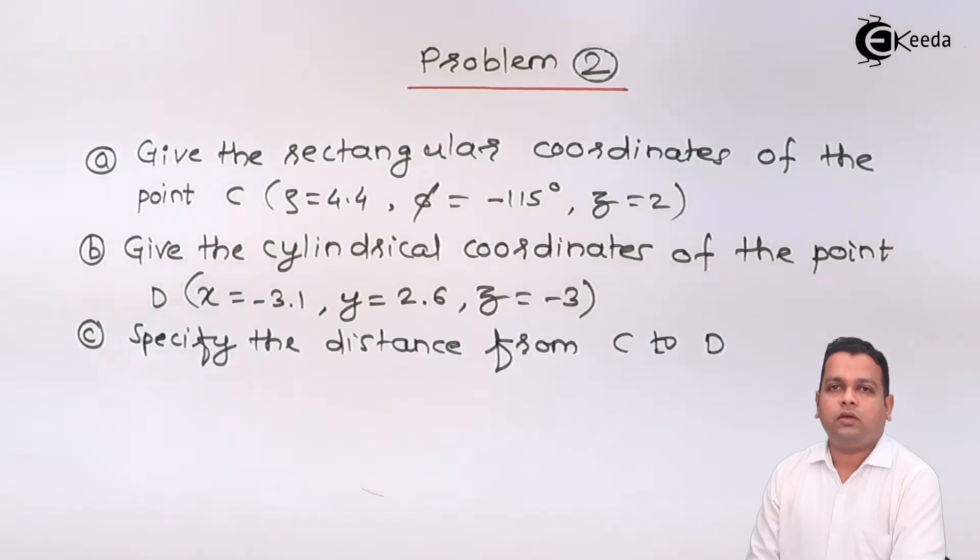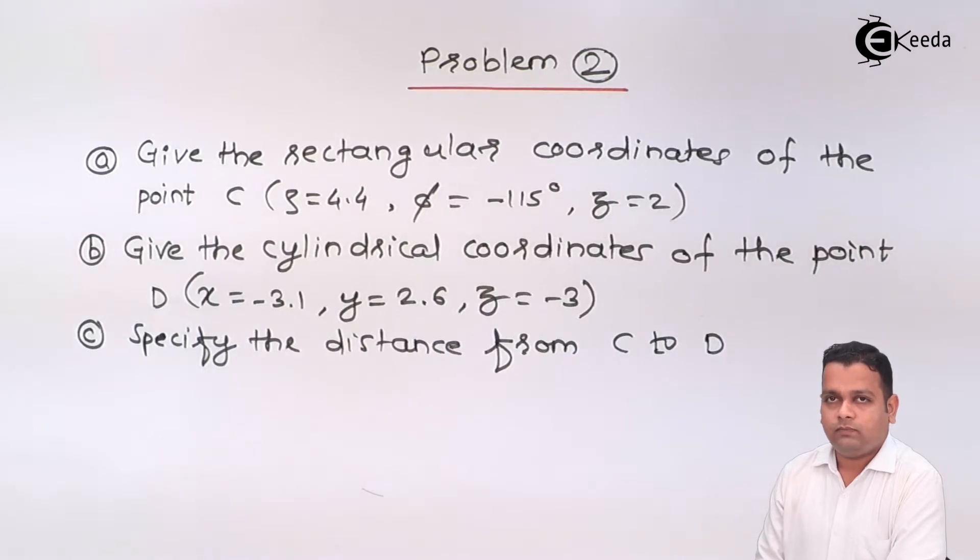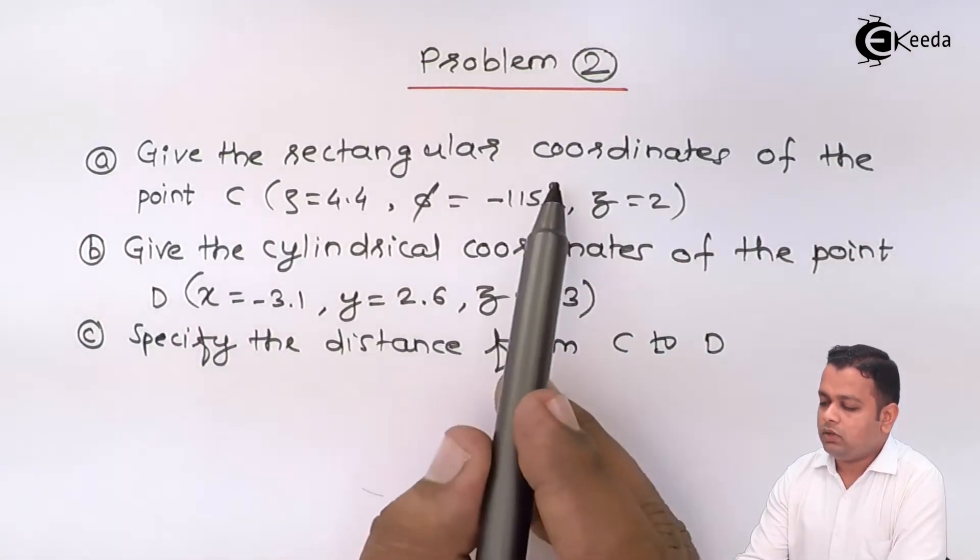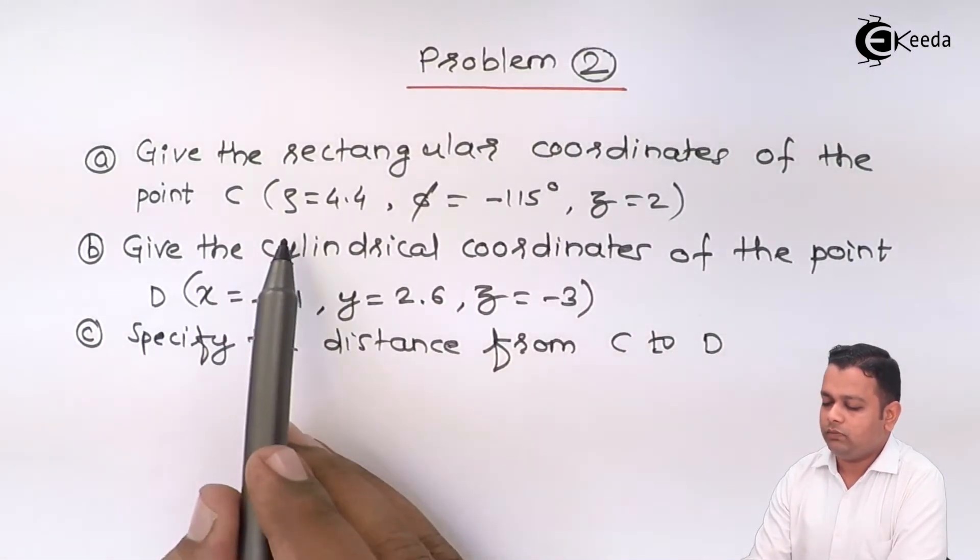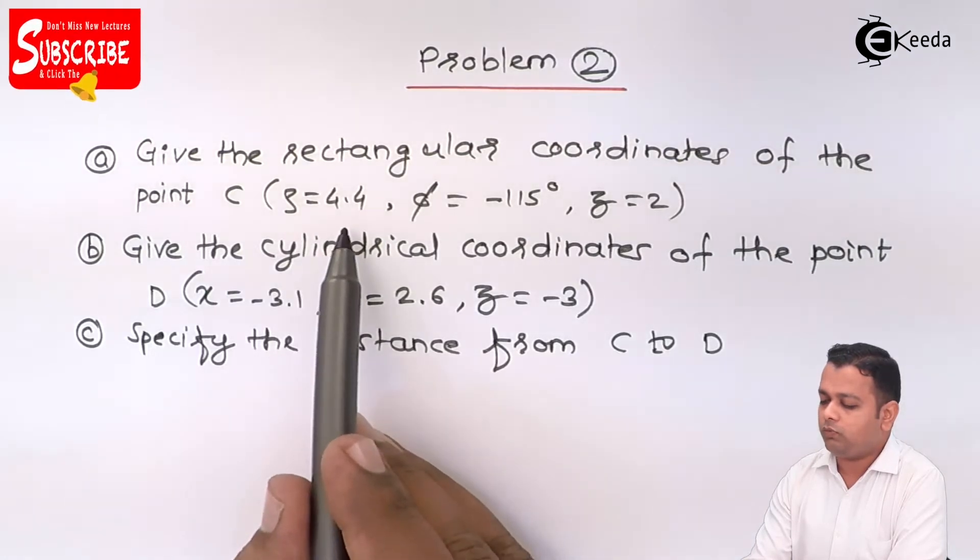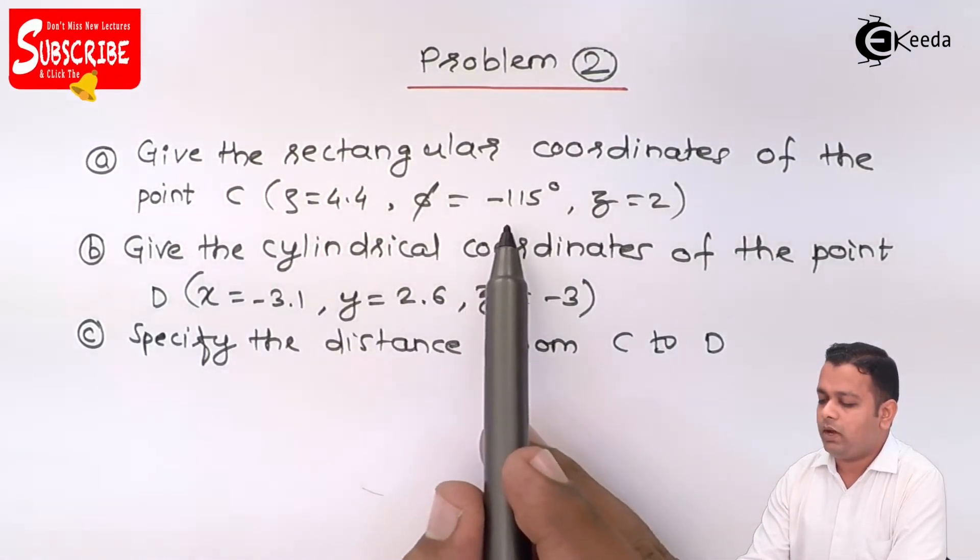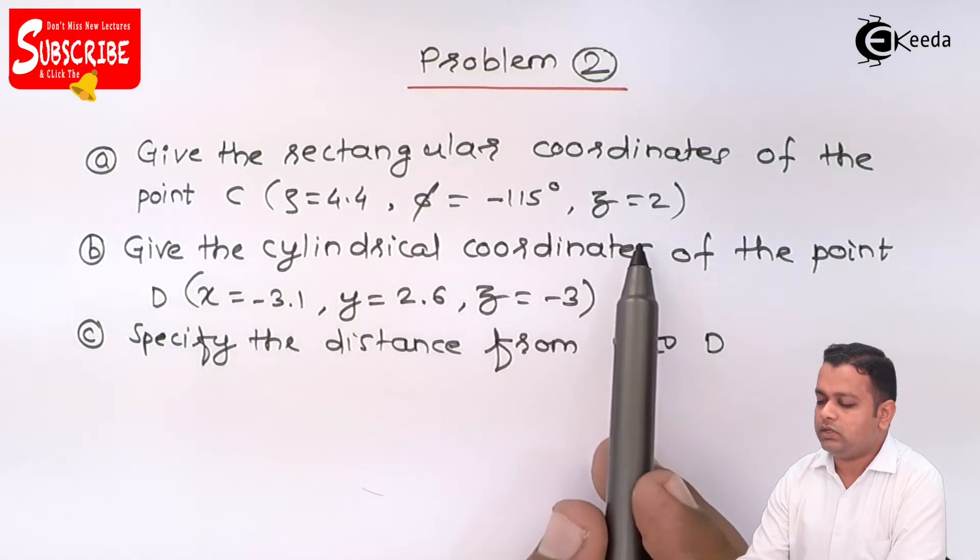The numerical or problem statement is given. Part A: give the rectangular coordinates of point C, provided rho is equal to 4.4, phi is equal to minus 115 degrees, z is equal to 2.